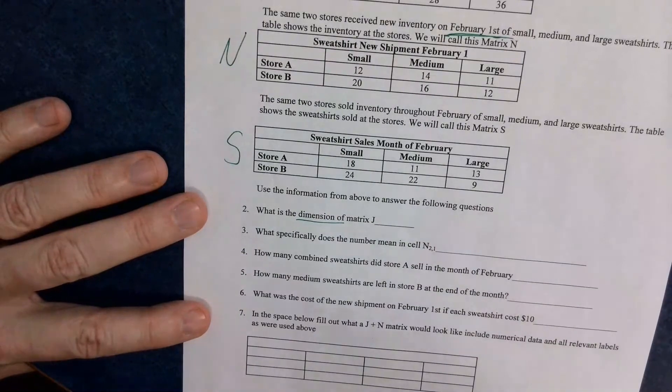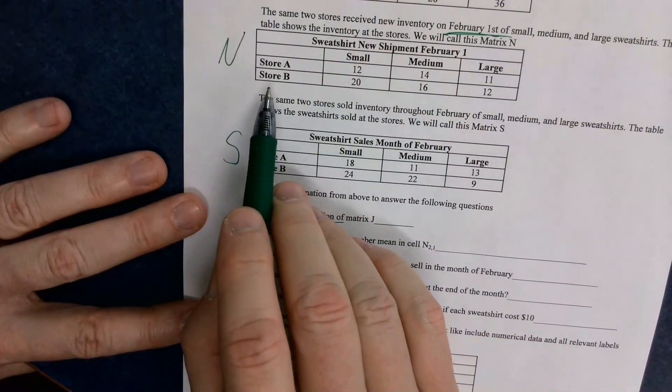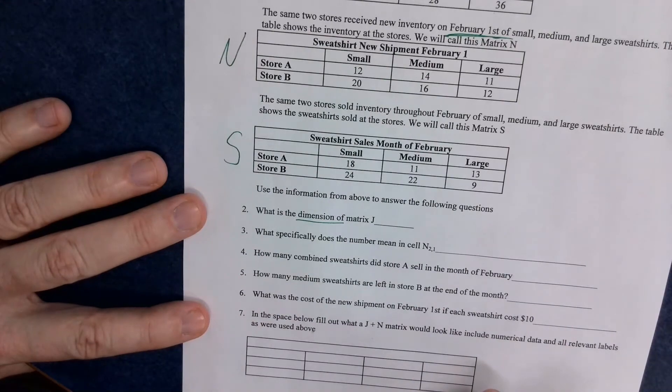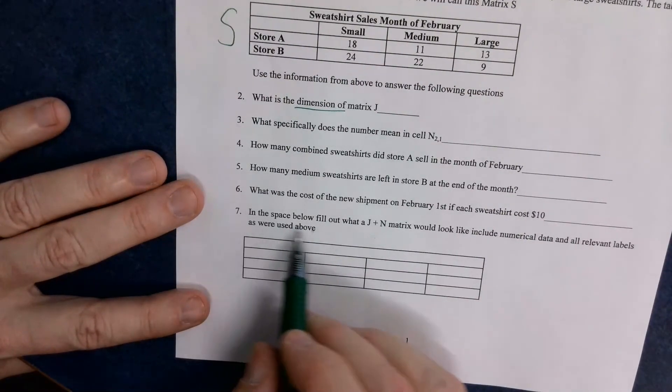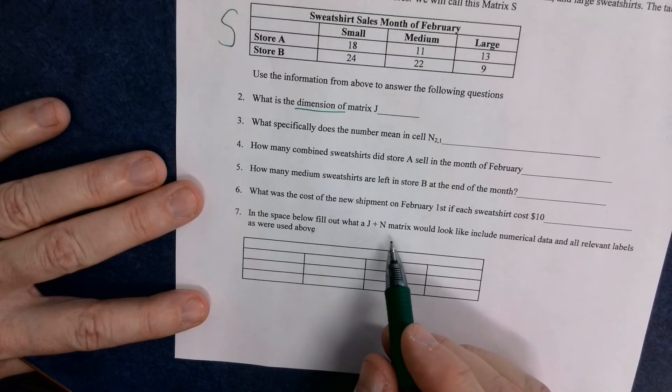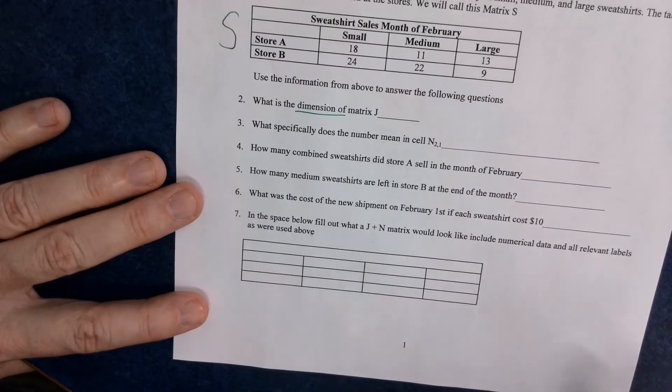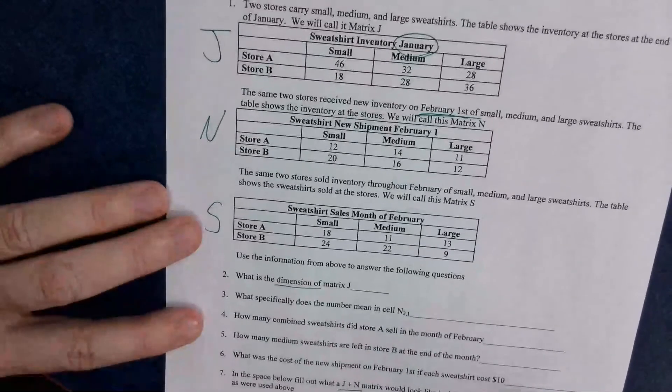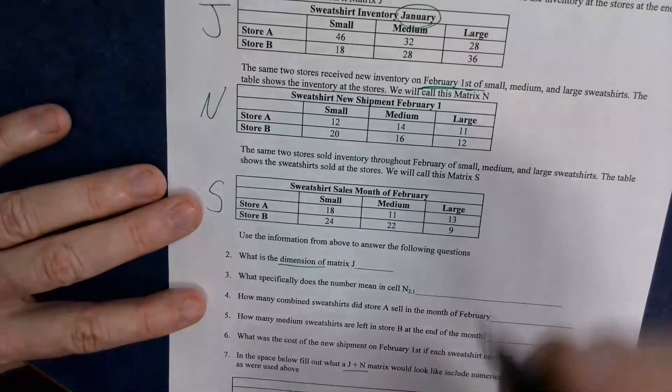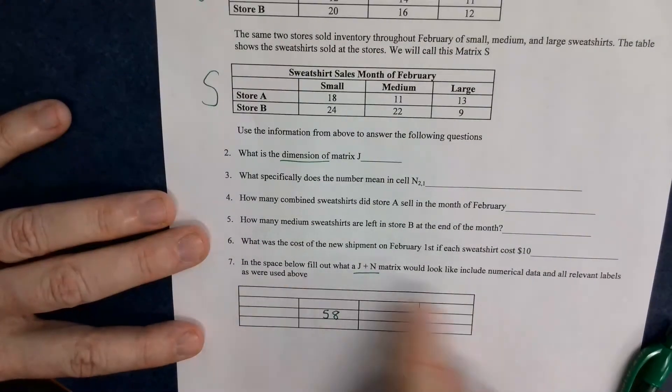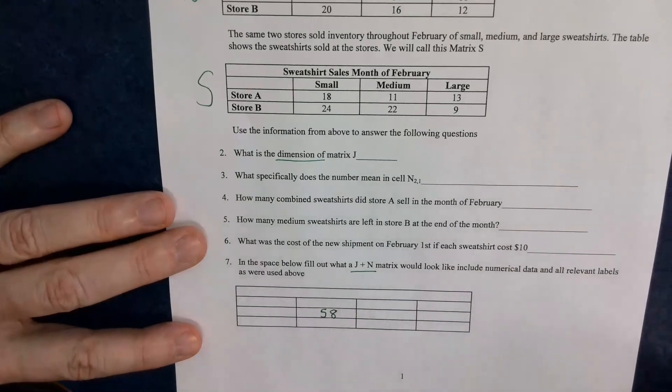If you're still watching the video, which you should be, it means that store B got 20 new small sweatshirts shipped to them on February 1st. And that would be ended up being added to their leftover inventory from January. So then it talks about other questions down the line. And it says in the space below, fill out J plus N matrix. What a J plus N matrix would look like. Include numerical data and all relevant labels as were used above. So again, it's looking up at here. So you're going to make a matrix that looks just like this. And what J plus N actually is. So I will tell you at least this. This 46 and this 12 would be 58. And that 58 would go right there. Fill in the rest of the stuff for what it means for each one of those things for J plus N.